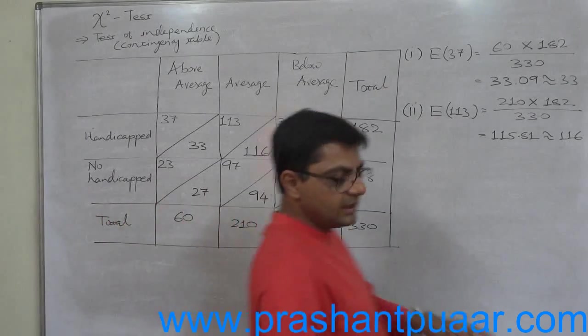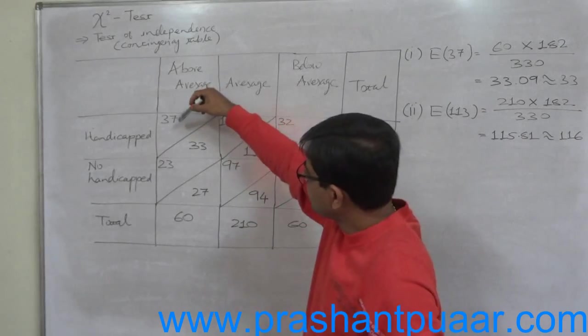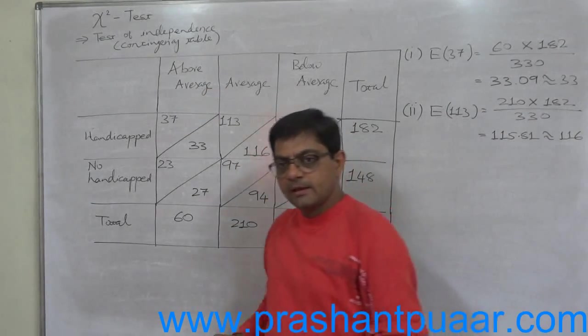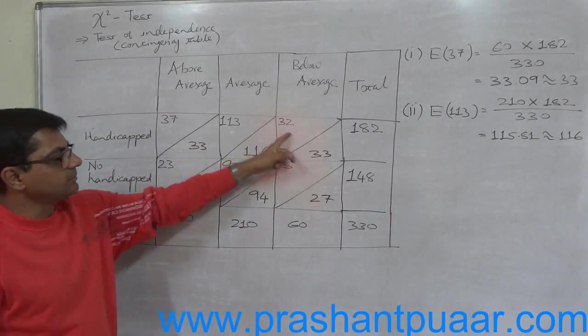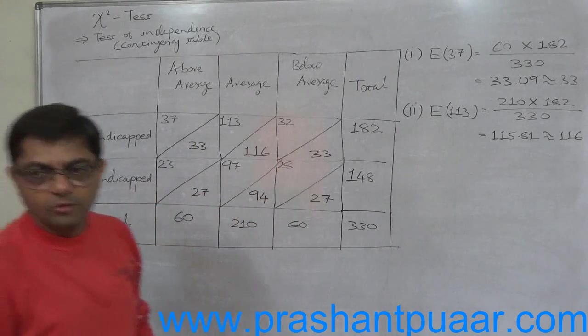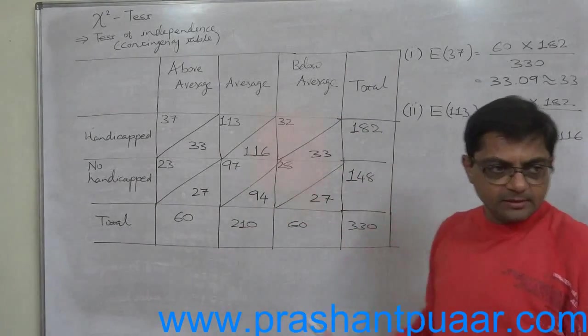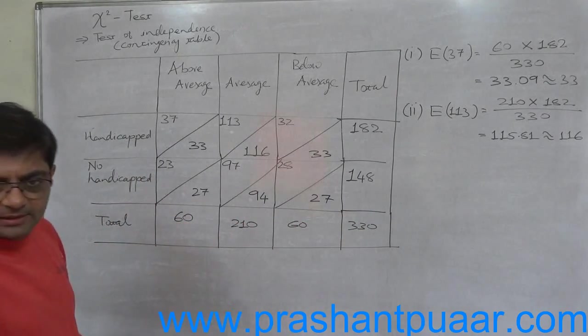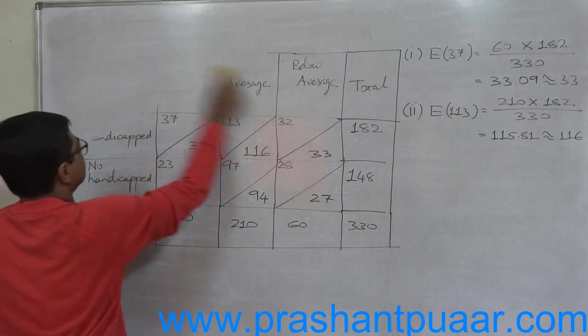So now we have actually pairs of frequencies for each cell: observed frequency and expected frequency. At the time of calculation of chi-square test, we have to maintain this pair. We should not break the pair at the time of calculation of chi-square. Any question for this table? Now the next part is the typical test of hypothesis.